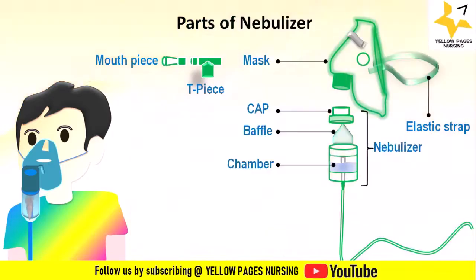The nebulizer chamber is the component where the liquid medication is placed for aerosolization. It typically has a cap or lid that can be removed for medication administration. Nebulizer chambers may have a small valve or baffle to prevent liquid medication from entering the tubing.